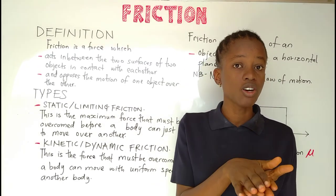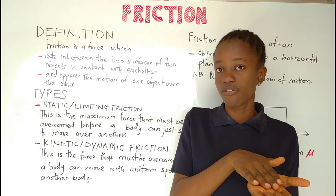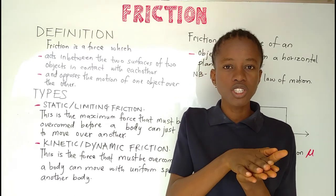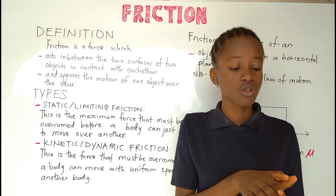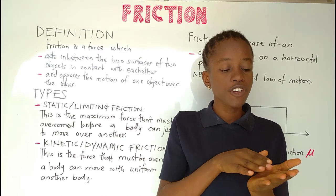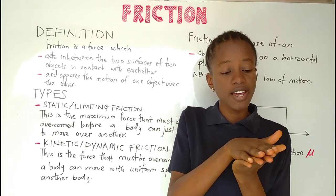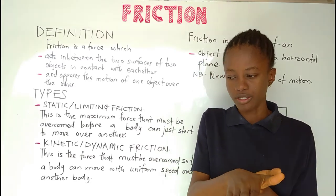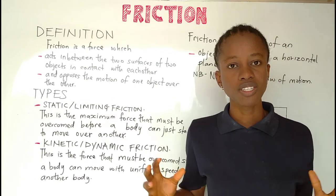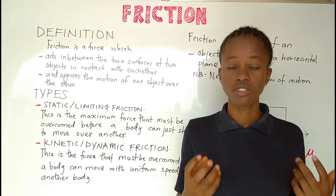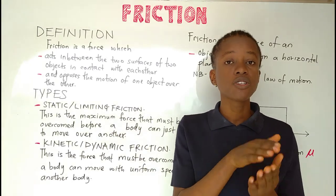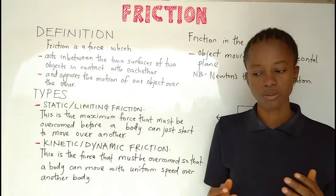Where we have the two surfaces of two objects in contact with each other, and one object is trying to move over the other or is already in motion over the other, friction is going to oppose this motion. Friction works against the motion of one object over the other. Putting these three things together, friction is a force which acts in between the two surfaces of two objects in contact with each other, and opposes the motion of one object over the other.